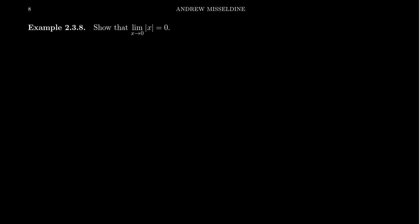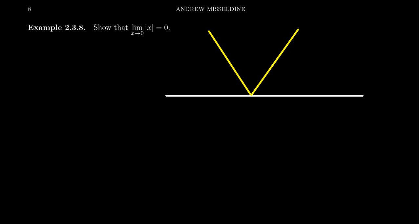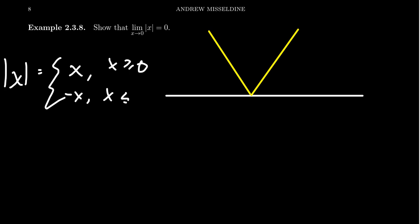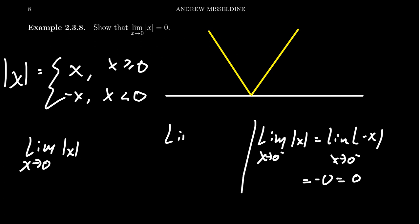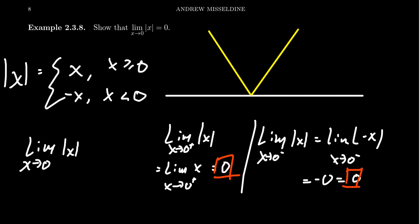Let's take another example: the limit as x approaches 0 of the absolute value of x. The absolute value function is naturally a piecewise function — its graph makes a classic V-shape. It looks like x when x is greater than or equal to 0, and like negative x when x is less than 0. The left-hand limit as x approaches 0 of the absolute value of x looks like the limit of negative x, which gives negative 0, equal to 0. The right-hand limit as x approaches 0 of the absolute value of x looks like the limit of x as x approaches 0, which is also 0. Both one-sided limits agree, so the limit of the absolute value of x as x approaches 0 is 0.